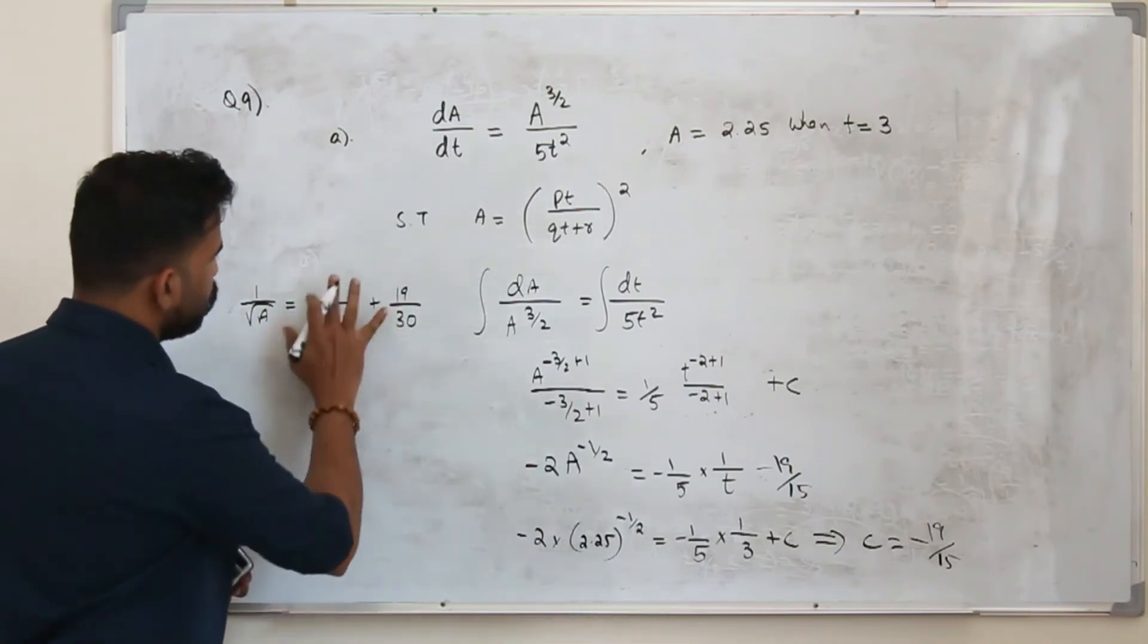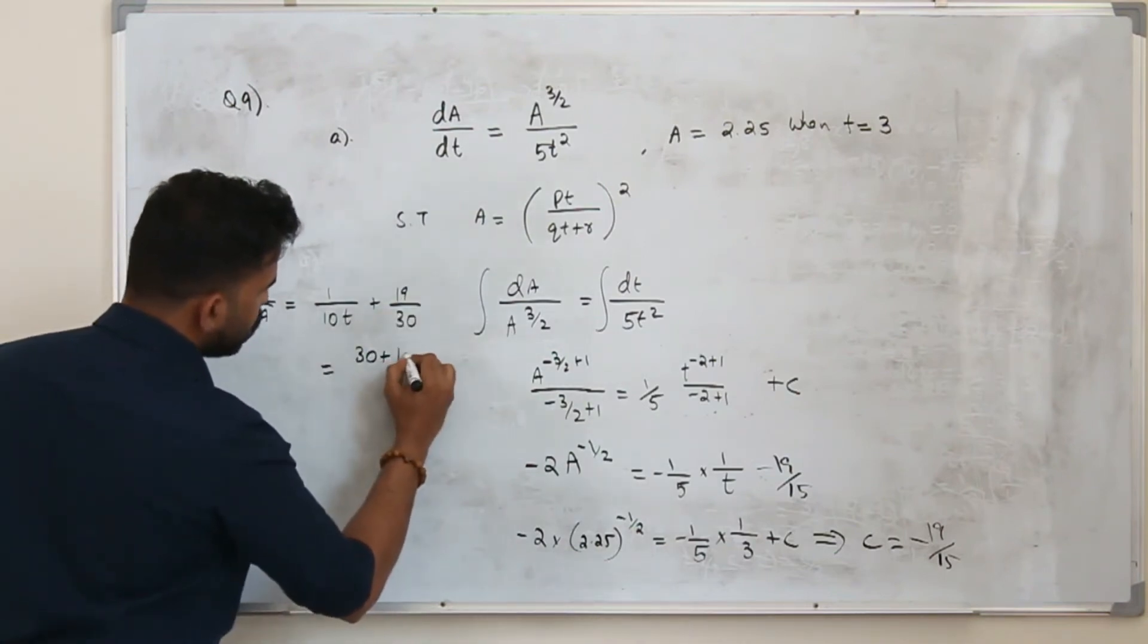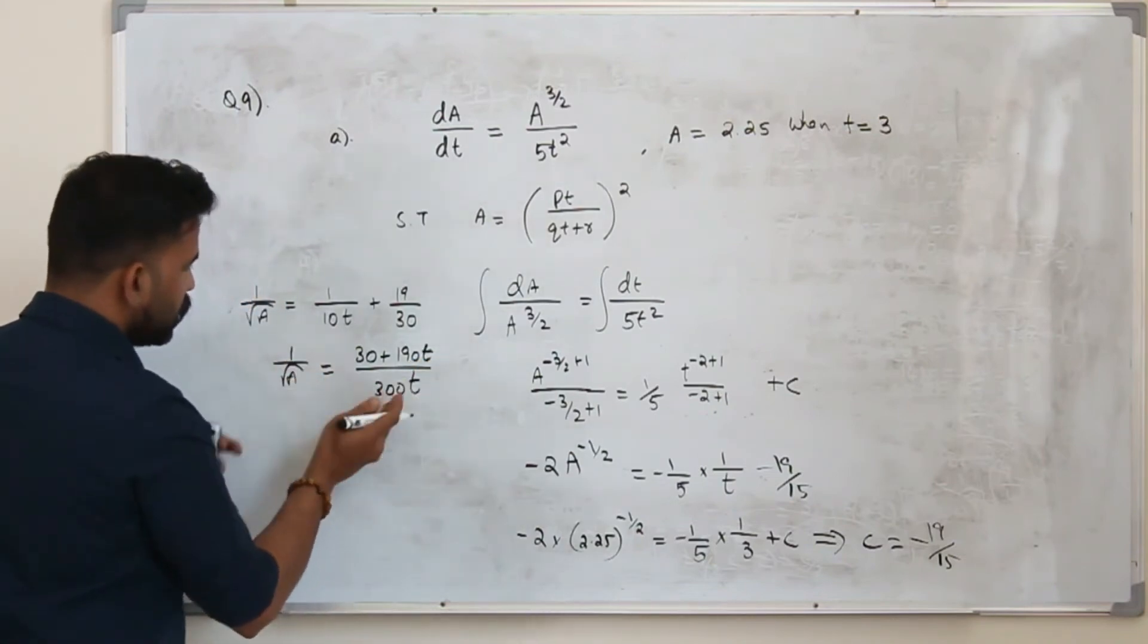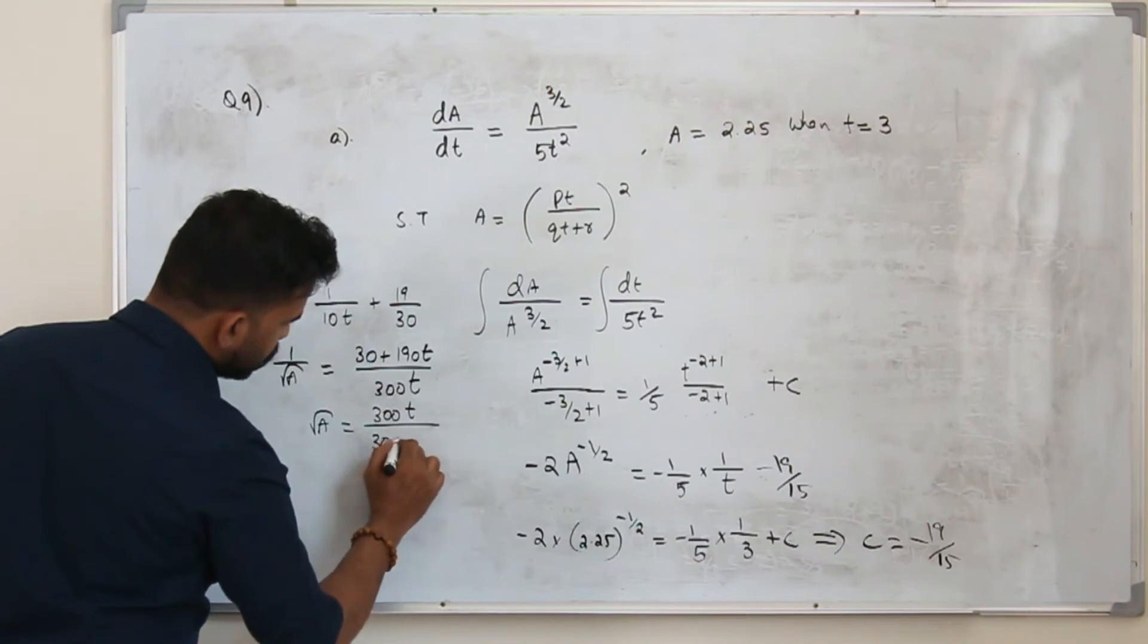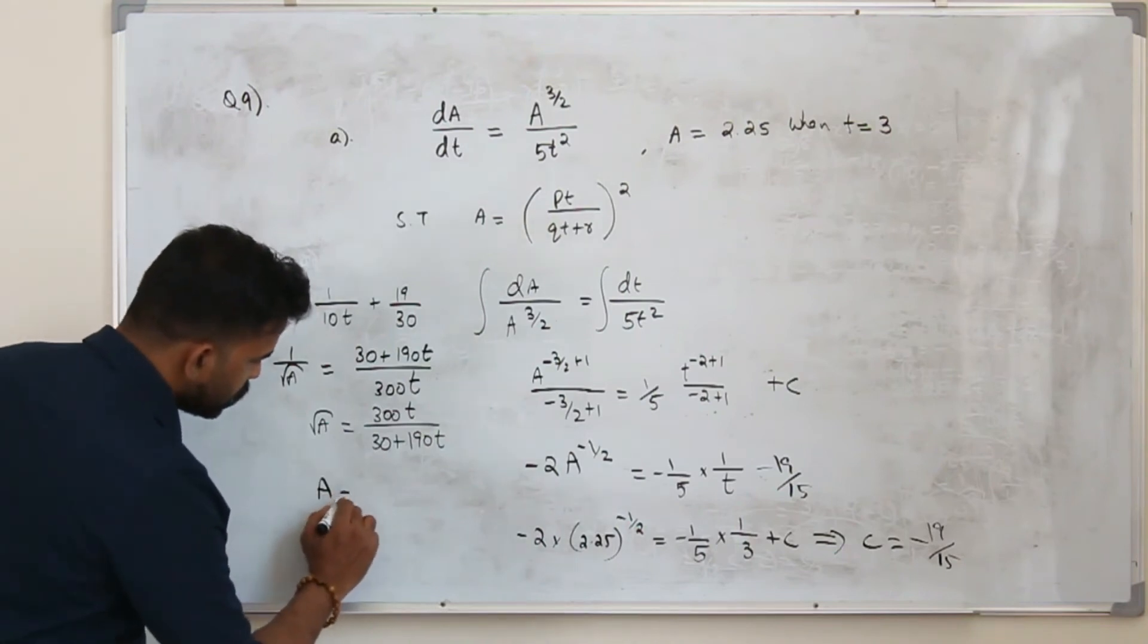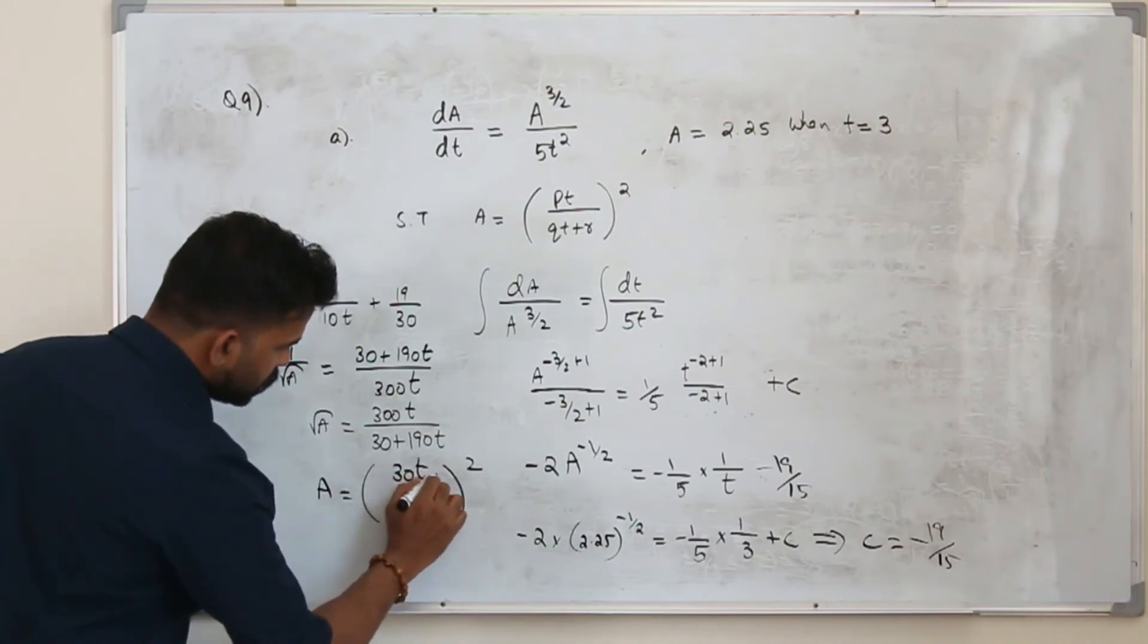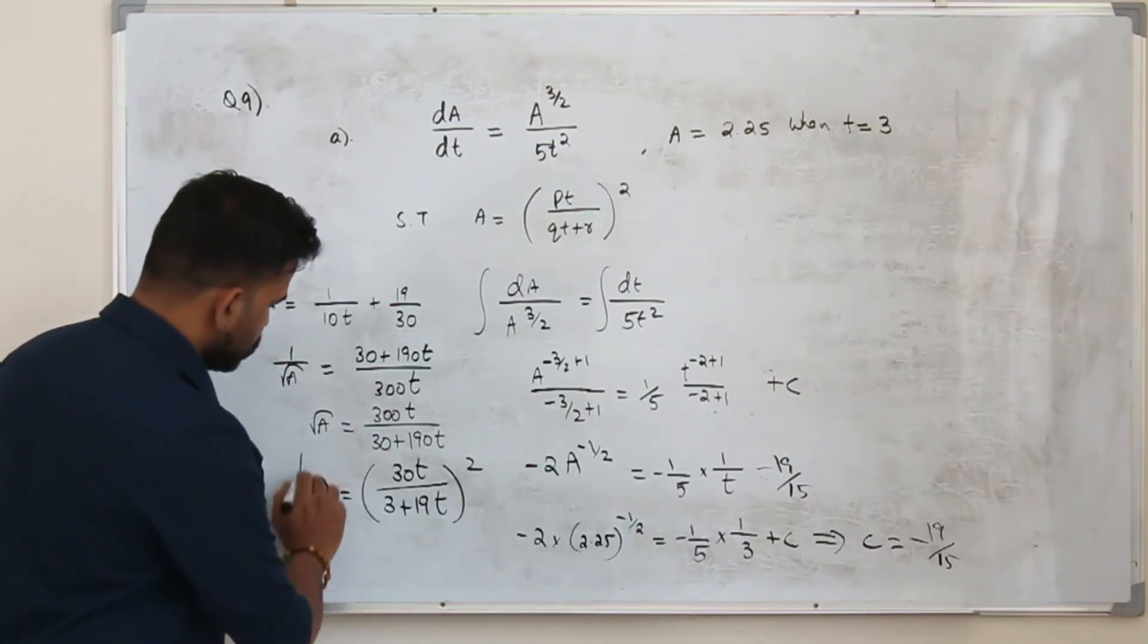Put it as a single fraction and flip it upside down. So 30 plus 19 times 10, 190t divided by 300t equals 1 upon root a. Now flip both sides. Root a is 300t divided by 30 plus 190t. Square both sides. But again you can take 10 as a common factor and cancel out. You'll have 30t divided by 3 plus 19t.